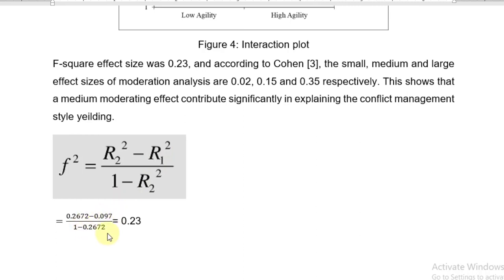By using this formula, I got 0.23 as my f-square effect size. According to Cohen, there are three categories: small, medium, and large effect sizes of moderation analysis. 0.02 corresponds to small, 0.15 to medium, and 0.35 to large.